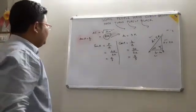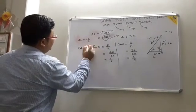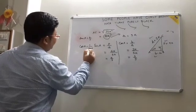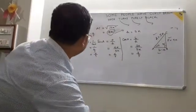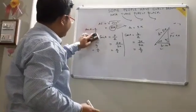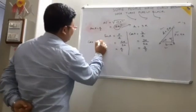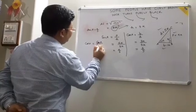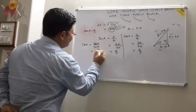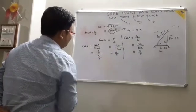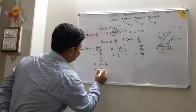Now we find cot A. The opposite of tan is cot. Cot A equals 1 by tan A, which is 1 divided by (4/3), giving 3 by 4. Another method: cot A equals cos A by sin A, which is (3/5) divided by (4/5), giving 3 by 5 into 5 by 4, which equals 3 by 4.